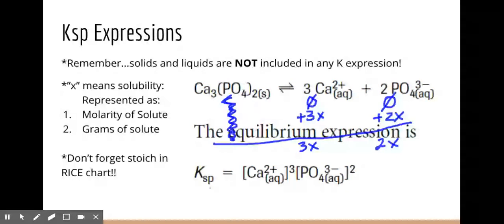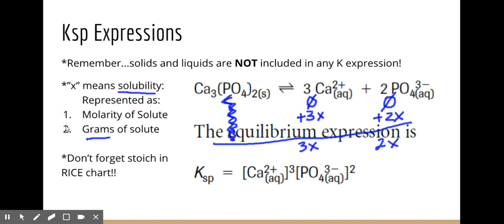When solving for X in regular KC, we just said it's the factor that things are changing by. But in KSP, X has a specific name: it stands for solubility. Solubility can be represented in two ways — it can be represented as molarity, since we're working with molarity concentrations in the RICE chart. You could also express solubility in grams.